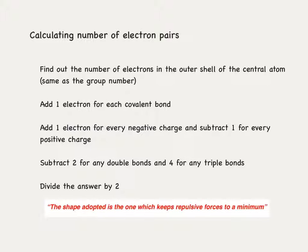The final shape is deciphered from the total number of electron pairs, and the shape adopted is the one which keeps repulsive forces to a minimum.